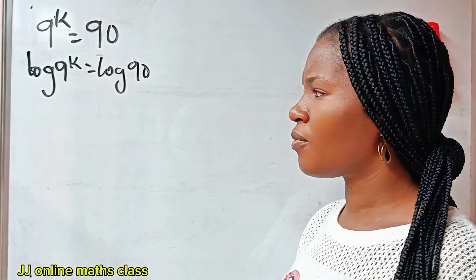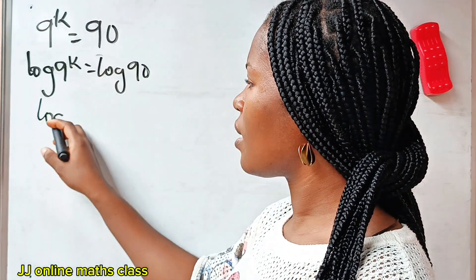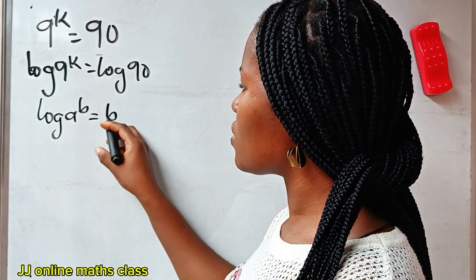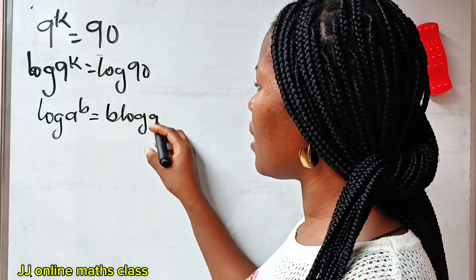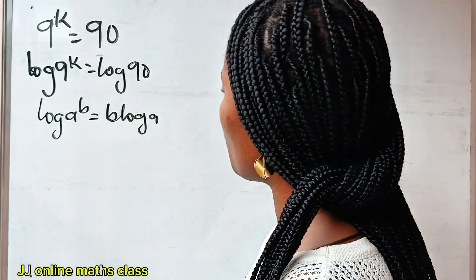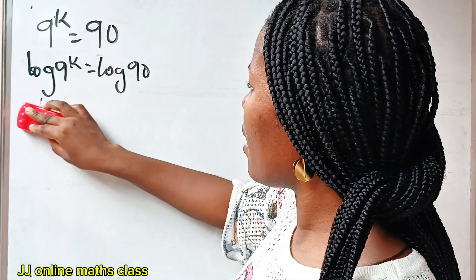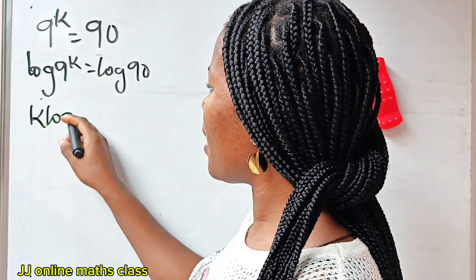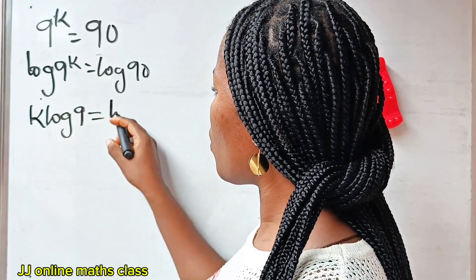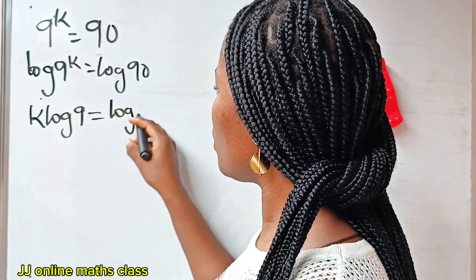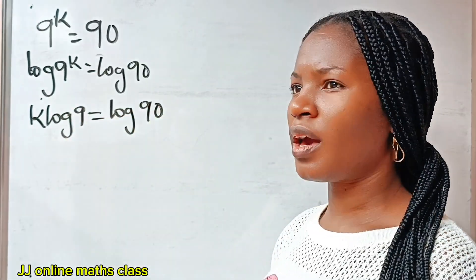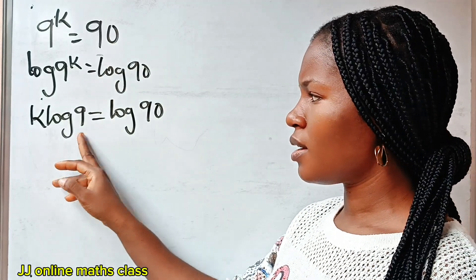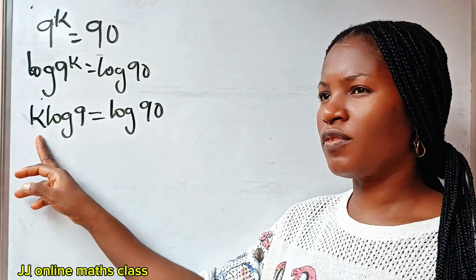And this is what we are going to have. When you have log A raised to the power of B, it is equal to B multiplied by log A. So that means that we can write this as K multiplied by log 9 is equal to log 90. So we are going to divide both sides of this equation by log 9 since we are looking for the value of K.